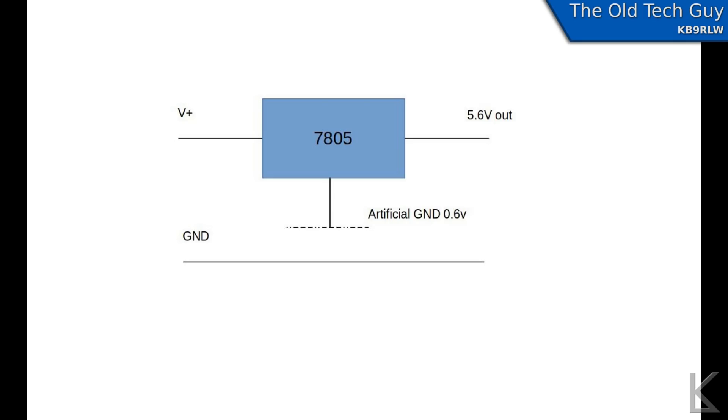If we lift that ground 1 volt above the actual ground, then the 7805 is going to reference that, and it's going to output 6 volts, because it's going to output 5 volts relative to what it sees as ground.